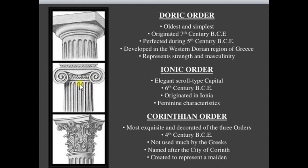This is the Ionic order. The Ionic order is characterized by its scroll-type capitals. It was developed in the 6th century BC and originated in Ionia. It is associated with feminine character.